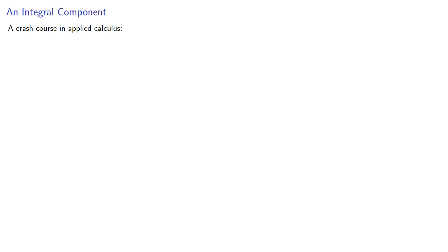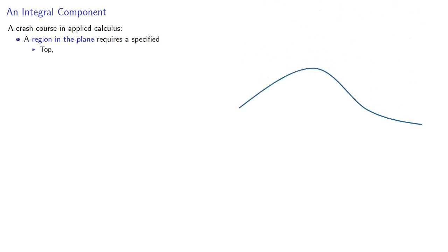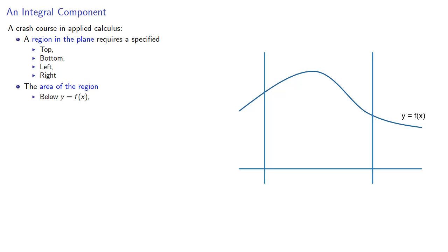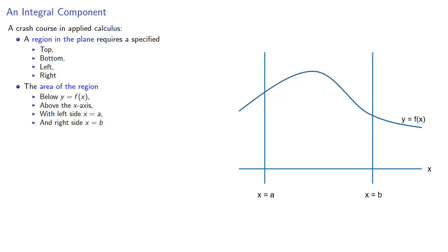A region in the plane requires a specified top, bottom, left, and right. We can talk about the area of the region below some graph, above the x-axis, with left side vertical line x equals a and right side vertical line x equals b. This area is expressed using the definite integral written in the standard notation.